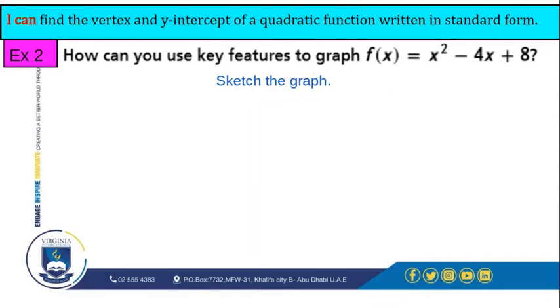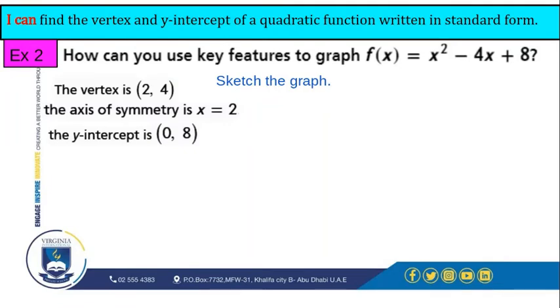Now we came to the fun part, which is sketching a graph. At first, we will plot our findings. The vertex we found is (2, 4), the axis of symmetry is 2, and the y-intercept is (0, 8).